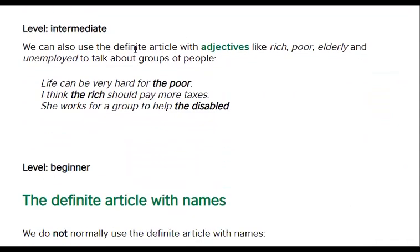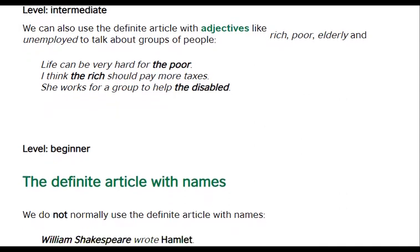We can also use the definite article with adjectives like poor, rich, elderly, and unemployed to talk about groups of people. 'Life can be very hard for the poor' — just like we talked about the wolves and the kangaroos, here we are talking about all the poor people. 'I think the rich should pay more taxes.' 'She worked for a group to help the disabled' — all sorts of disabled people.